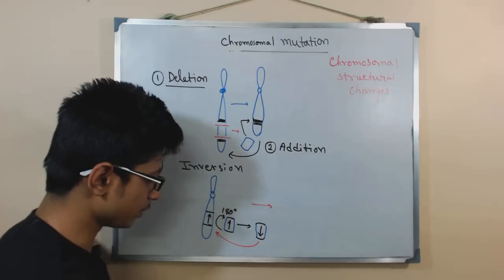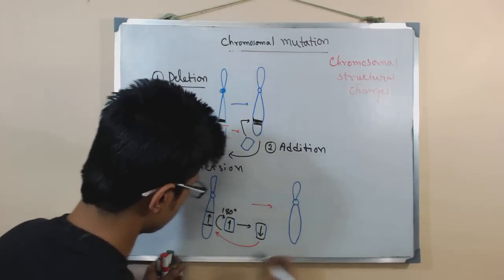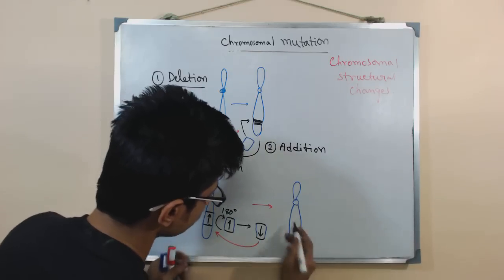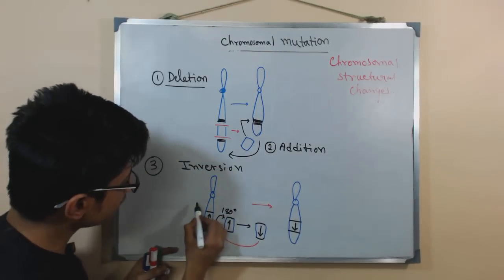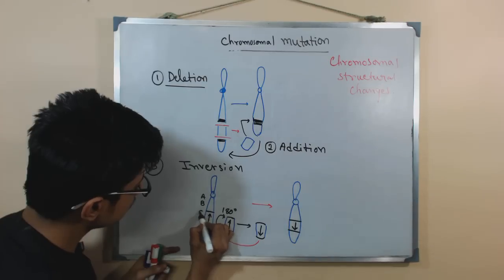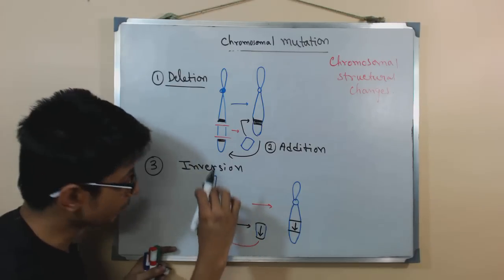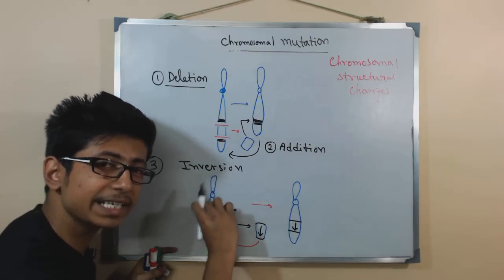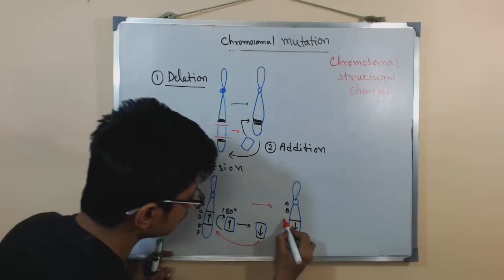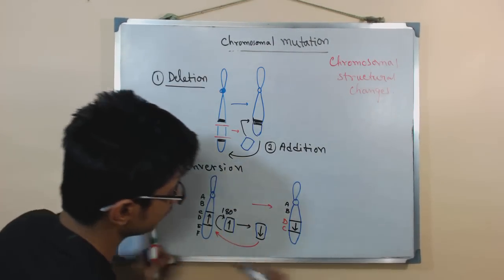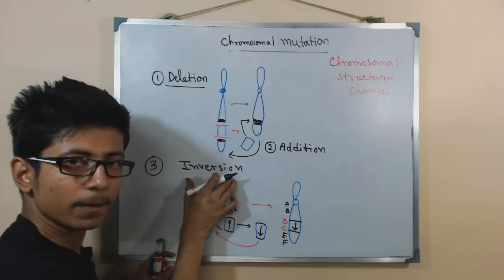After the inversion, the chromosome looks different from before. For example, if the genes were originally in order A, B, C, D, E, F — and only the C and D segment is inverted — then after inversion we have A, B, D, C, E, F. The sequence of the genes is changed and altered, and that is called inversion of the chromosome.